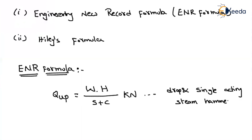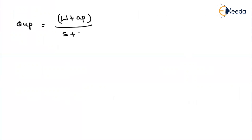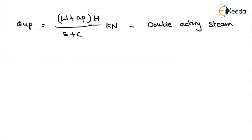A drop hammer is manually raised to a height and then dropped. If it is a single acting hammer, the weight of the hammer is applied through a mechanical system. For the double acting steam hammer, the ultimate capacity of a pile equals (W + A × P) divided by (S + C), multiplied by H. This formula is also in kilonewtons.